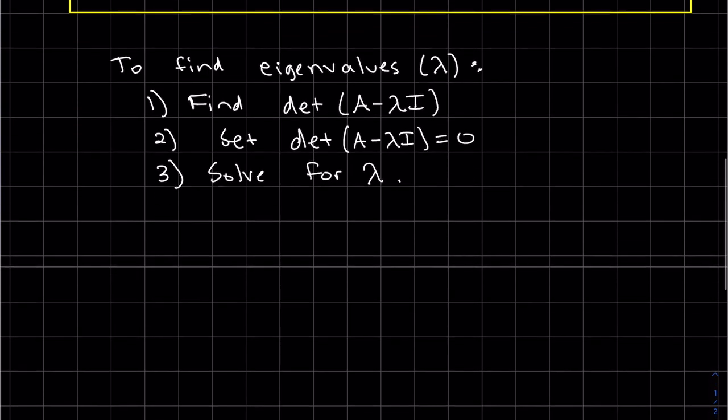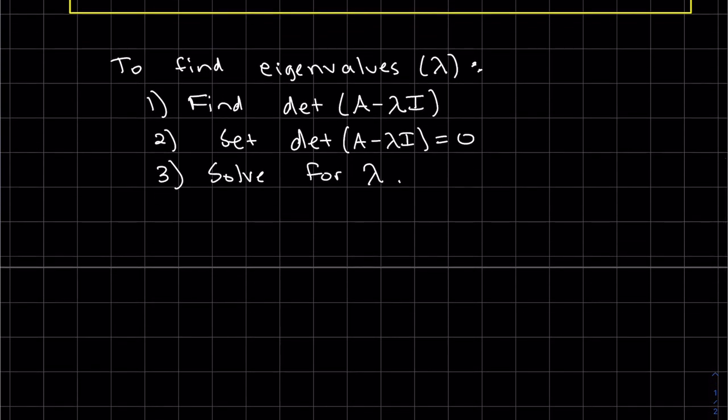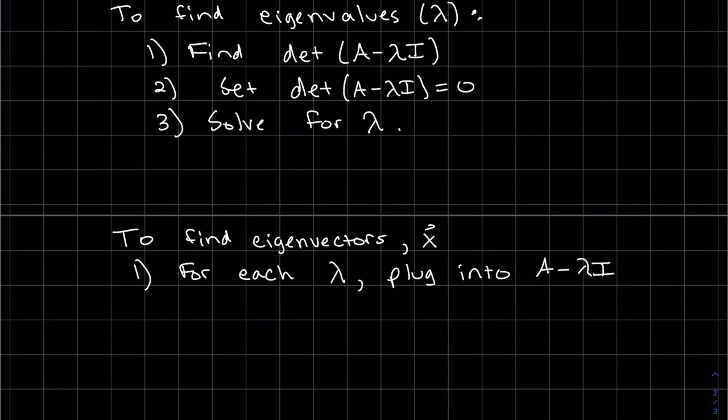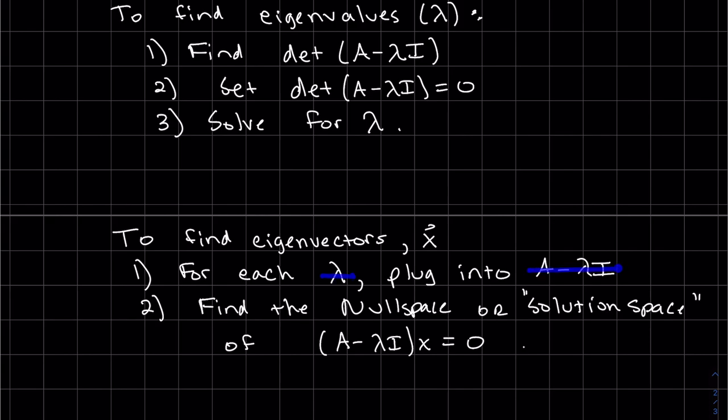After you've done that, we want to be able to find eigenvectors. So for each eigenvalue, we'll find the corresponding eigenvector by plugging the lambda that we find into this matrix, and then we'll solve A minus lambda I, X equals zero. Basically, we'll solve the solution space or the null space of this equation.